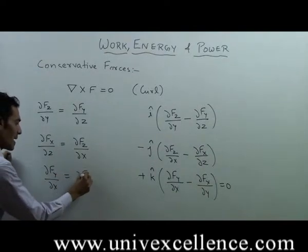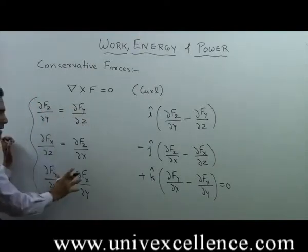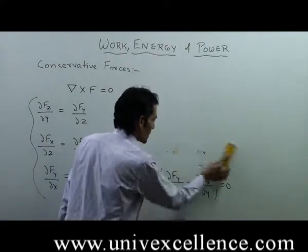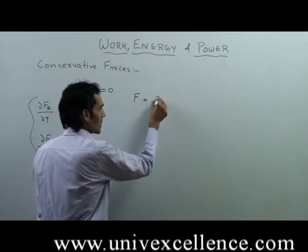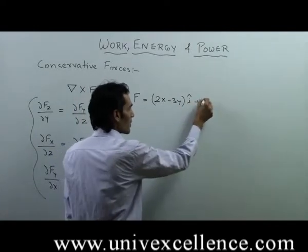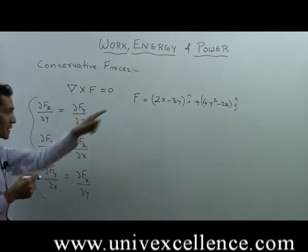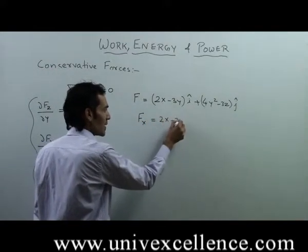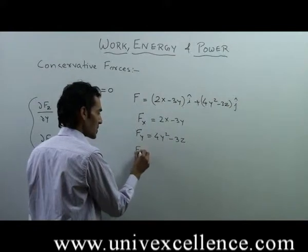Let's visualize this with an example. Suppose the force is F equals (2x minus 3y) i-cap plus (4y squared minus 3z) j-cap. In this case, Fx equals 2x minus 3y, Fy equals 4y squared minus 3z, and Fz equals 0.